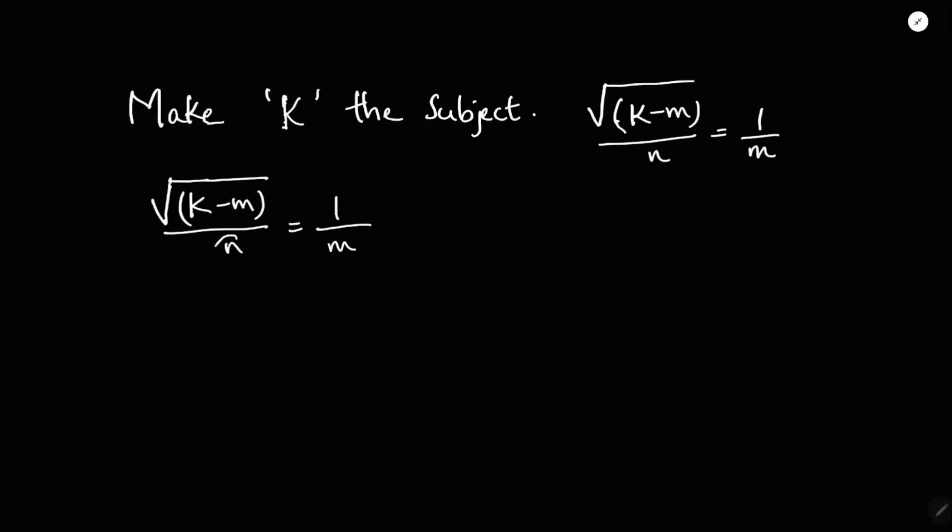See, first I will transpose this n towards RHS. So you will be left with under root k minus m equals n by m.